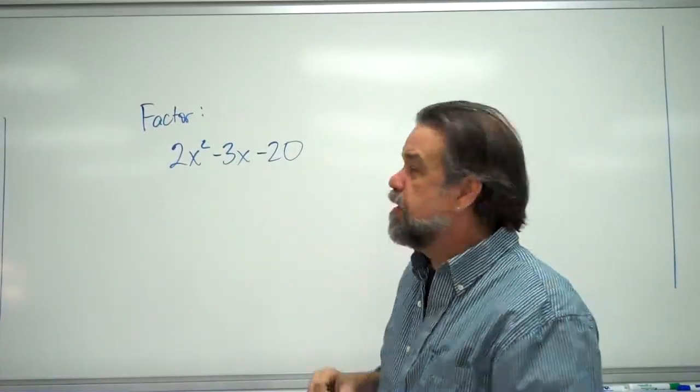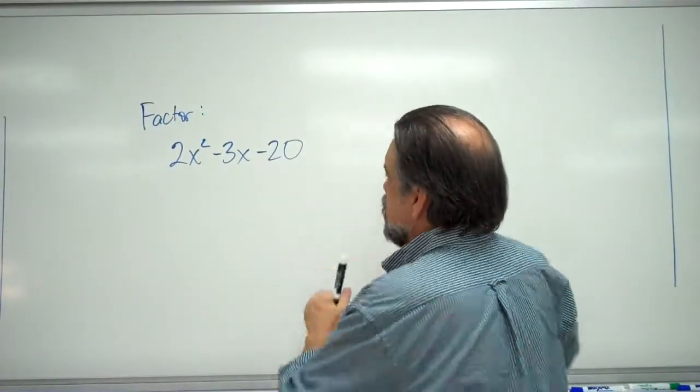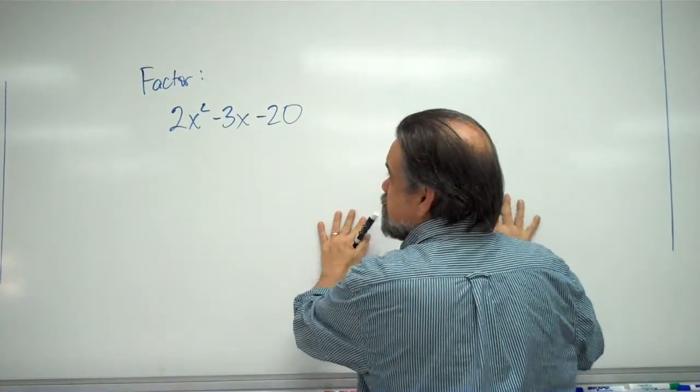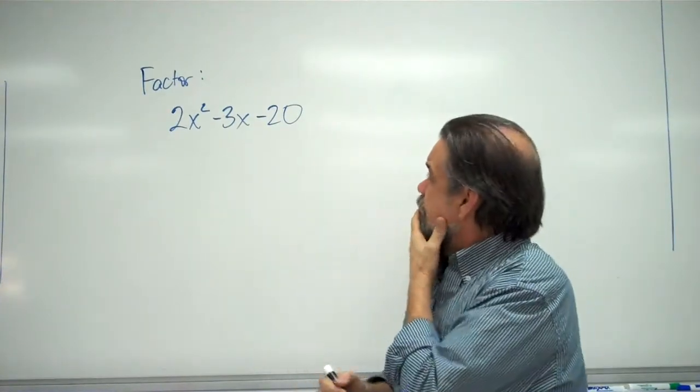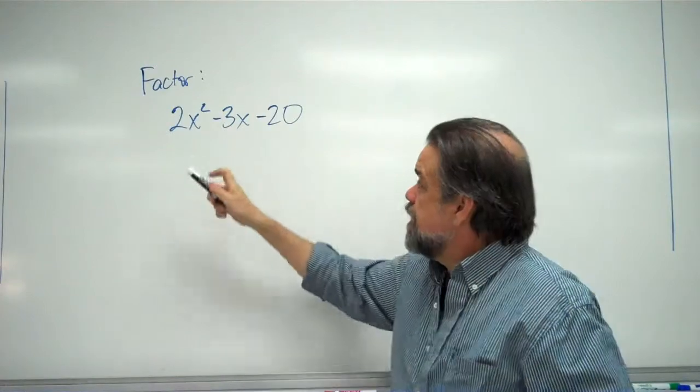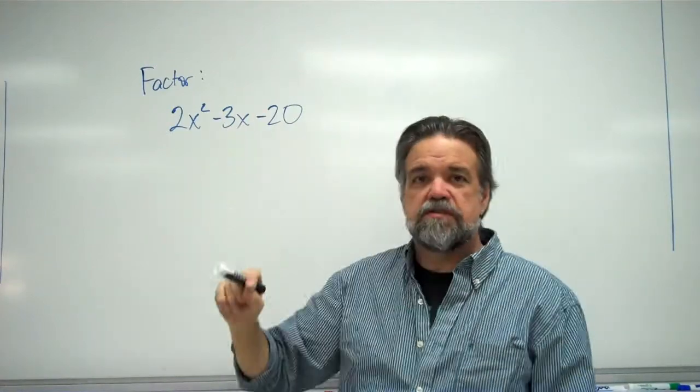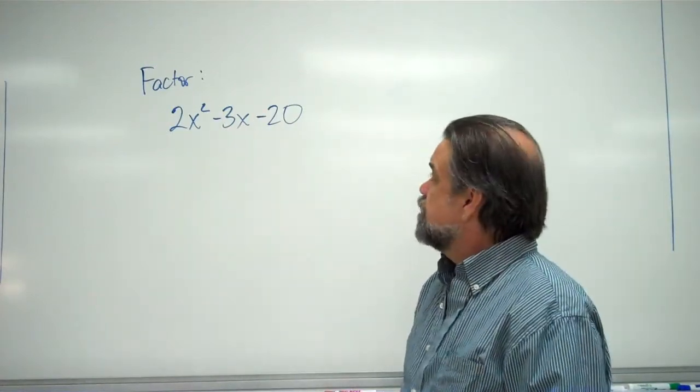Let's see if this one's any better. We have 2x squared plus 3x minus 20. All right. This time, this one's even, this one's even, this one's not. So, we can't do what we just did.